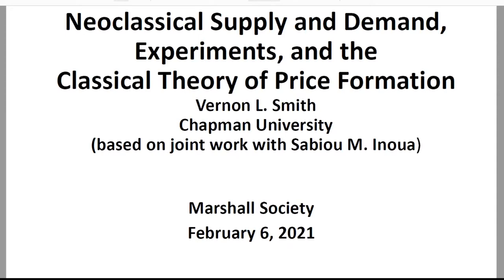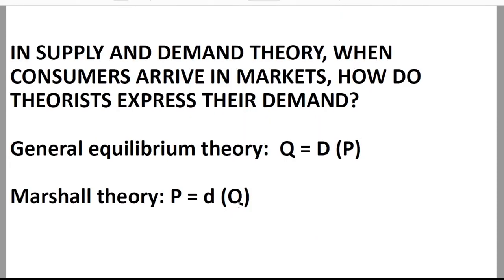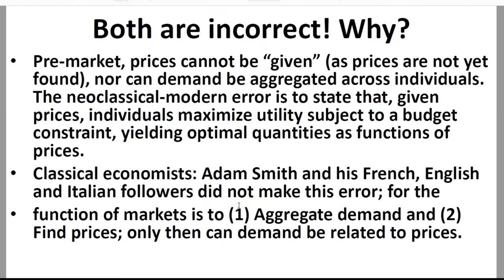Well, they're both incorrect — they're both wrong. Why? Very simply, pre-market, before you go to market, prices cannot be given. They haven't been found yet. That's the whole point of Chapter 7 of the Wealth of Nations — people find those prices. Buyers and sellers find those prices when they go to market. So the Neoclassical and modern error is to state that given prices, individuals maximize utility subject to a budget constraint, yielding optimal quantities as functions of prices. You can't do that because there are no prices yet.